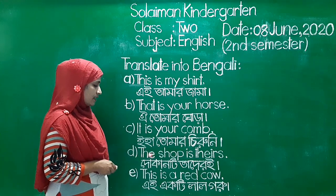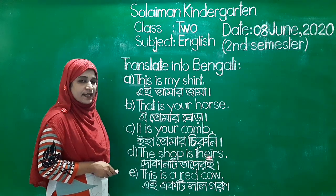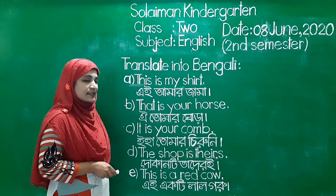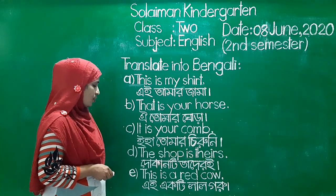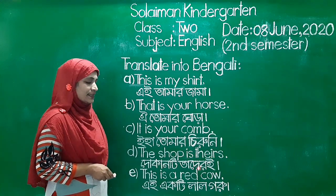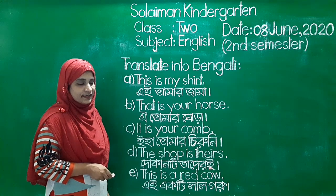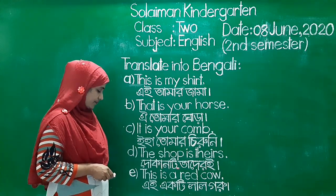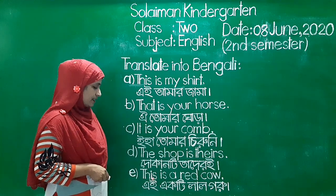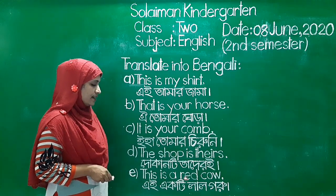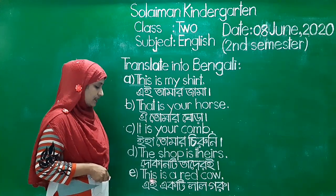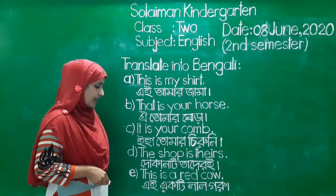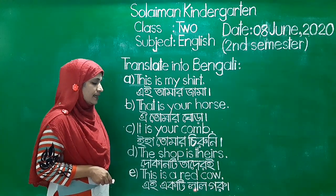D number 2: The shop is theirs. Arthro, dhokanti tathiri. E number: This is a red cow. Arthro, a-t-i-lal guru.